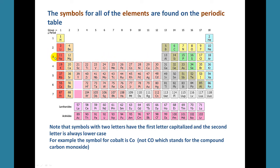Notice that some of the symbols have two letters. The first letter is always uppercase and the second letter is always lowercase. For example, the symbol for cobalt is a capital C and a lowercase o. You don't write it as a capital C with a capital O, because that actually stands for the compound carbon monoxide, not the element cobalt.